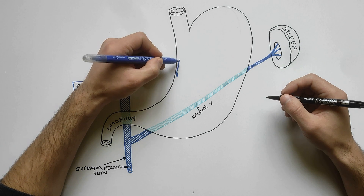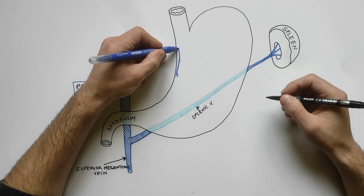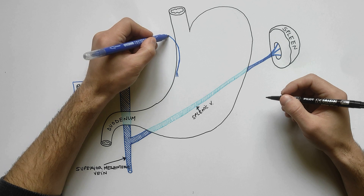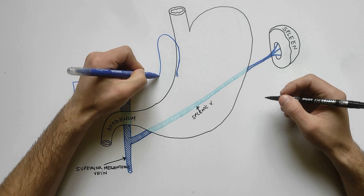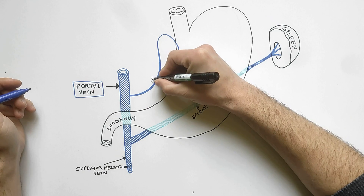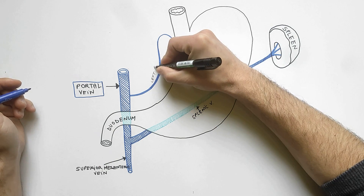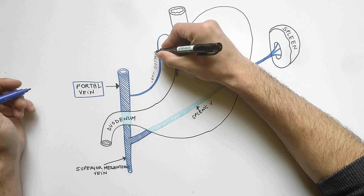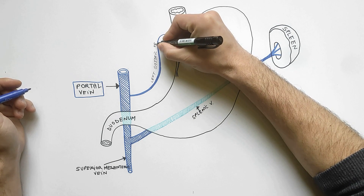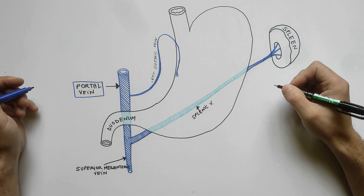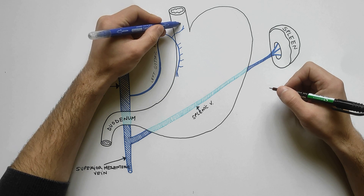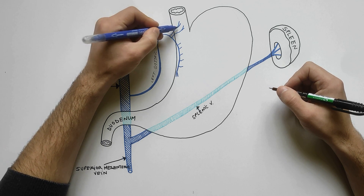The left gastric vein, which is also called the coronary vein of the stomach, describes a loop in its course along the upper half of the lesser curvature of the stomach. Apart from receiving blood from the upper part of the lesser curvature, it also drains blood from the subdiaphragmatic part of the esophagus by way of some esophageal veins.